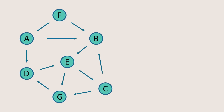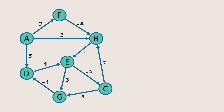Let's see how the Bellman-Ford algorithm finds the shortest path in a graph. It's similar to Dijkstra's algorithm, but with one key difference. Bellman-Ford can handle graphs with negative edge weights, and it can also detect negative weight cycles.